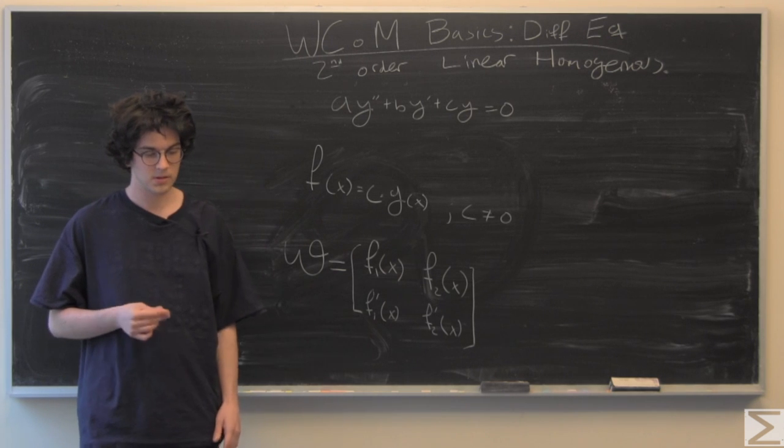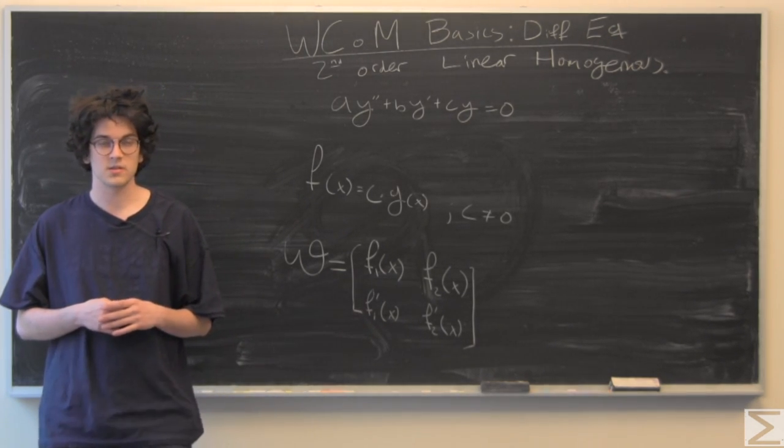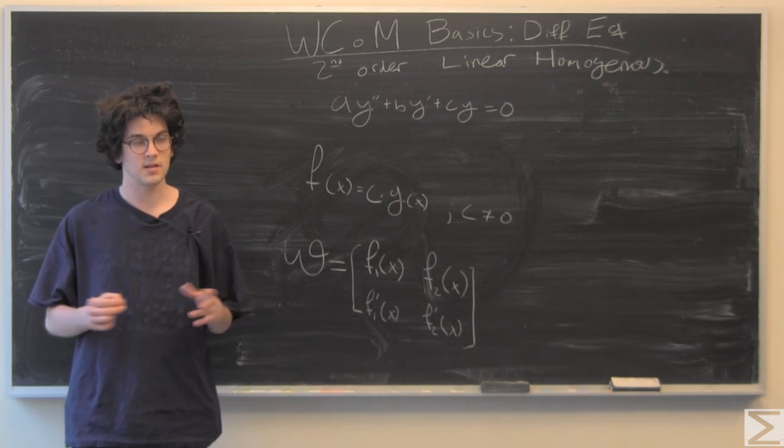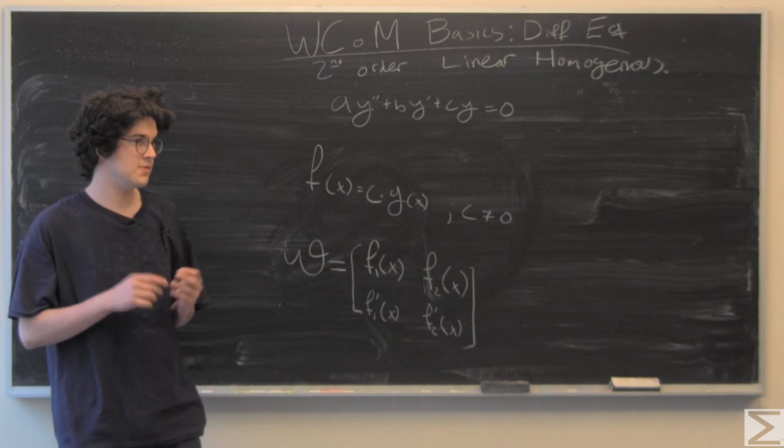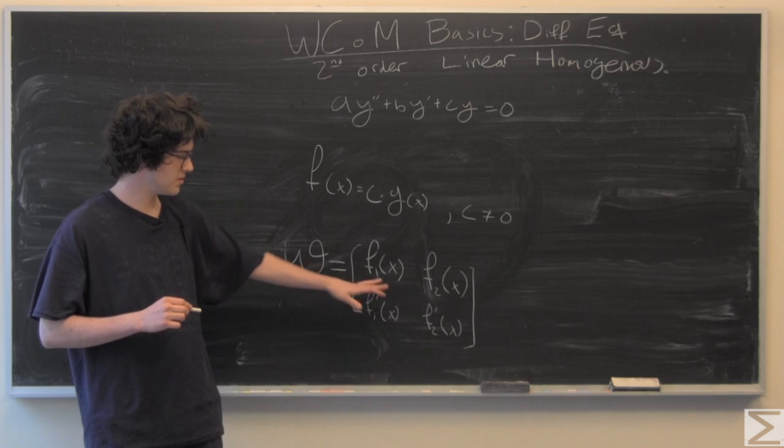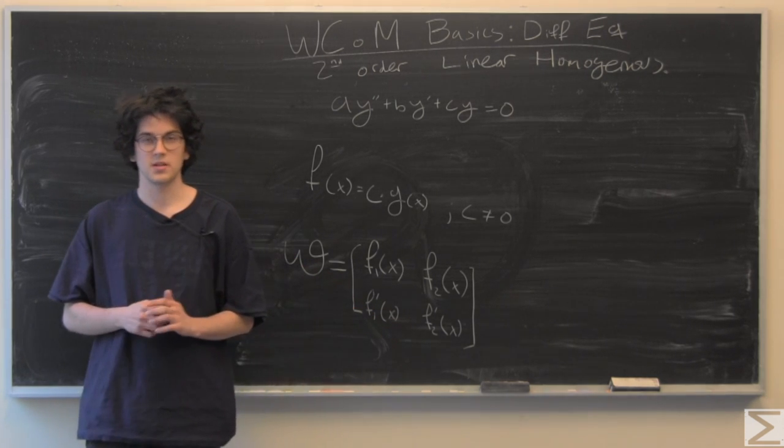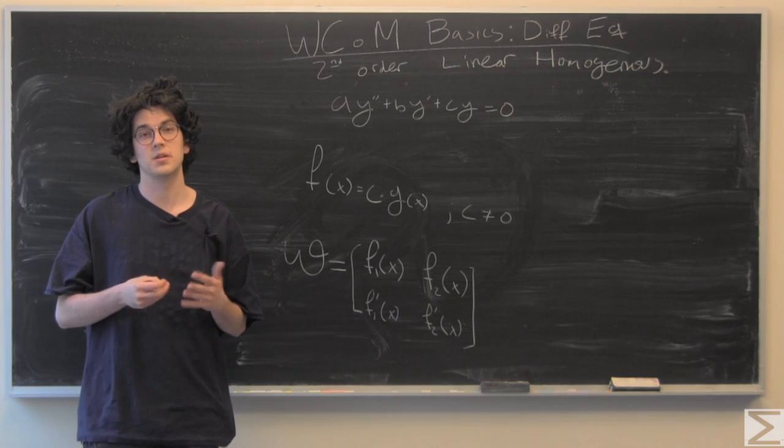Taking the determinant, if the determinant of the Wronskian is zero for all x, then they're linearly dependent. If there is even one x where the determinant of the Wronskian is not equal to zero, then they're linearly independent.